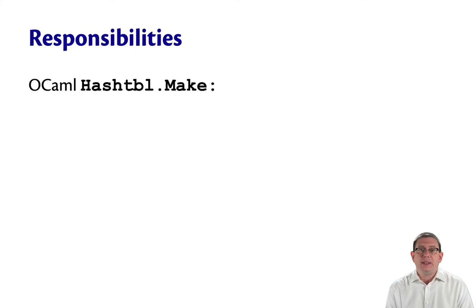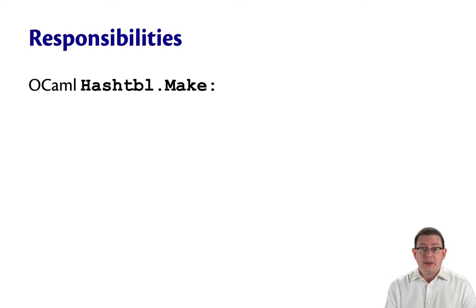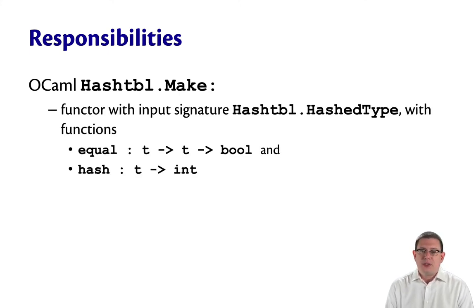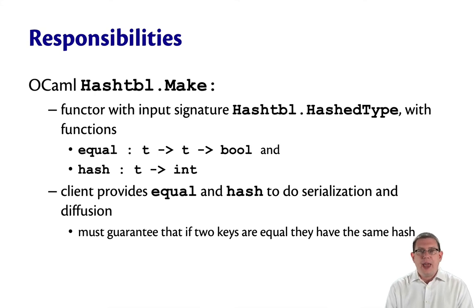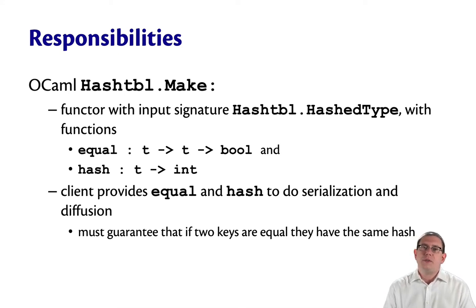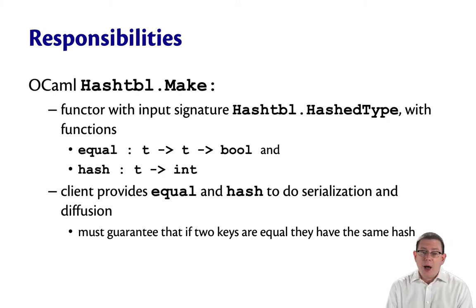OCaml actually provides a second implementation — still in the hash table module, but it's a functor nested inside called Make. This has an input whose signature is HashType. HashType requires you to provide a hash function, as well as an equal function which tells when two keys are equal. The client has to provide equal and hash to do the serialization and diffusion — getting from the input type T through a stream of bytes into an int. The client is responsible for guaranteeing that if two keys are equal, they must have the same hash.